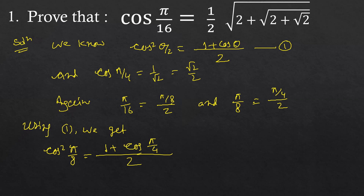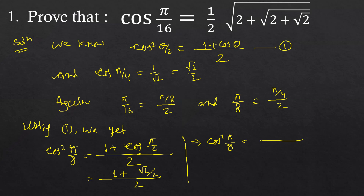This is equal to (1 plus cos(π/4)) by 2, which is equal to (1 plus √2/2) by 2, which is equal to (1 plus √2/2). From here, multiplying both numerator and denominator by 2, we get cos²(π/8) is equal to (2 plus √2) by 4.